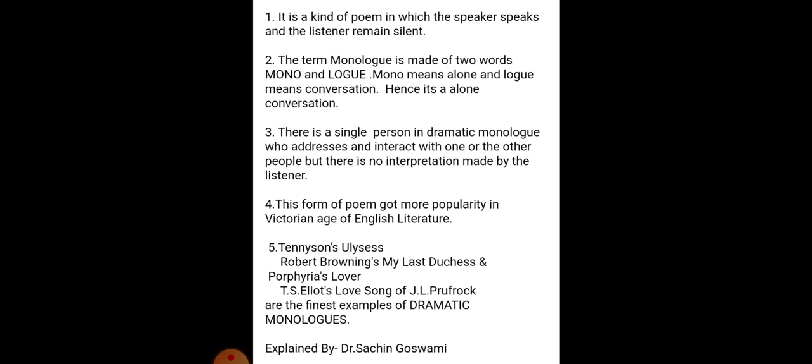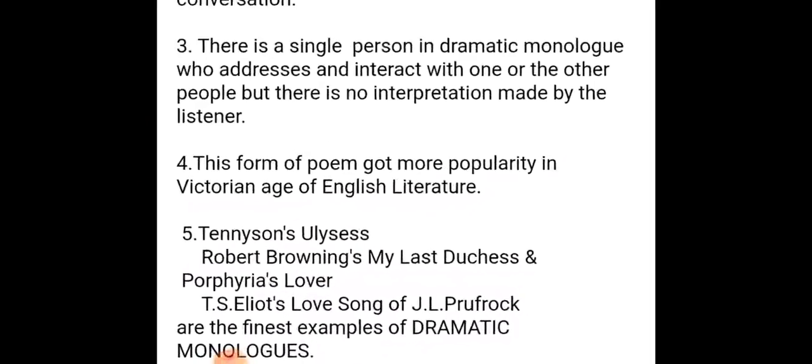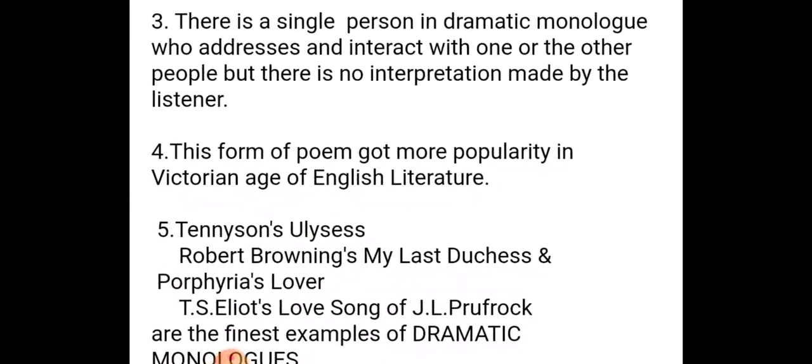Helen, who was the Queen of Sparta, eloped with Paris, and that caused the war. Ulysses was a hero of that war. But in this poem, Ulysses has grown old. Yet he says he has not truly aged — 'Life piled on life is too short' — even many lives would not be enough, and he wants to live the short life remaining to the fullest. He is a kind of adventurous man who wants to move forward on his journey.